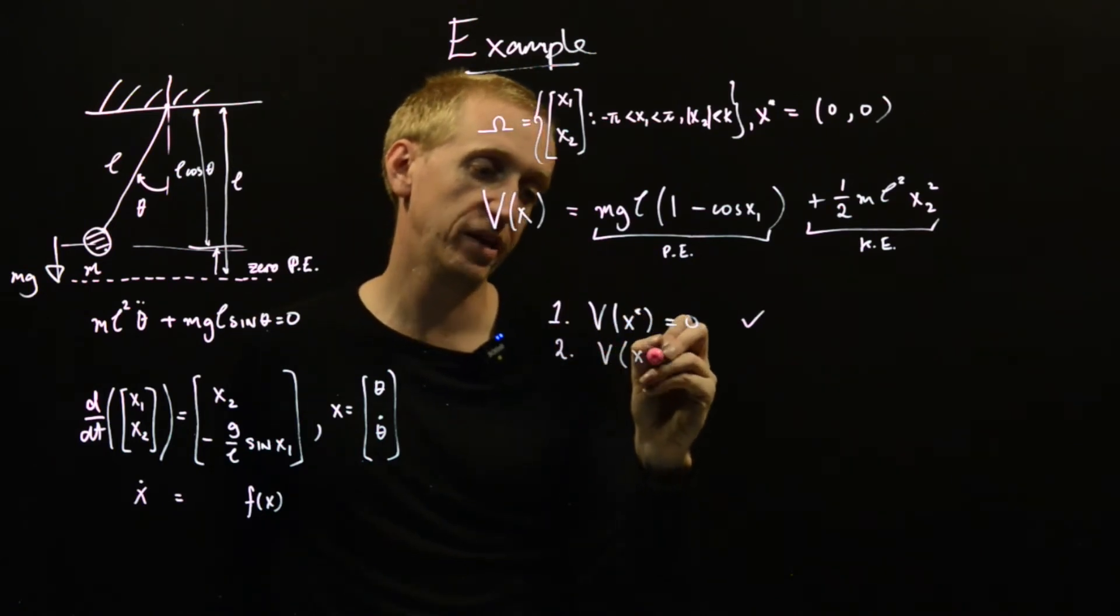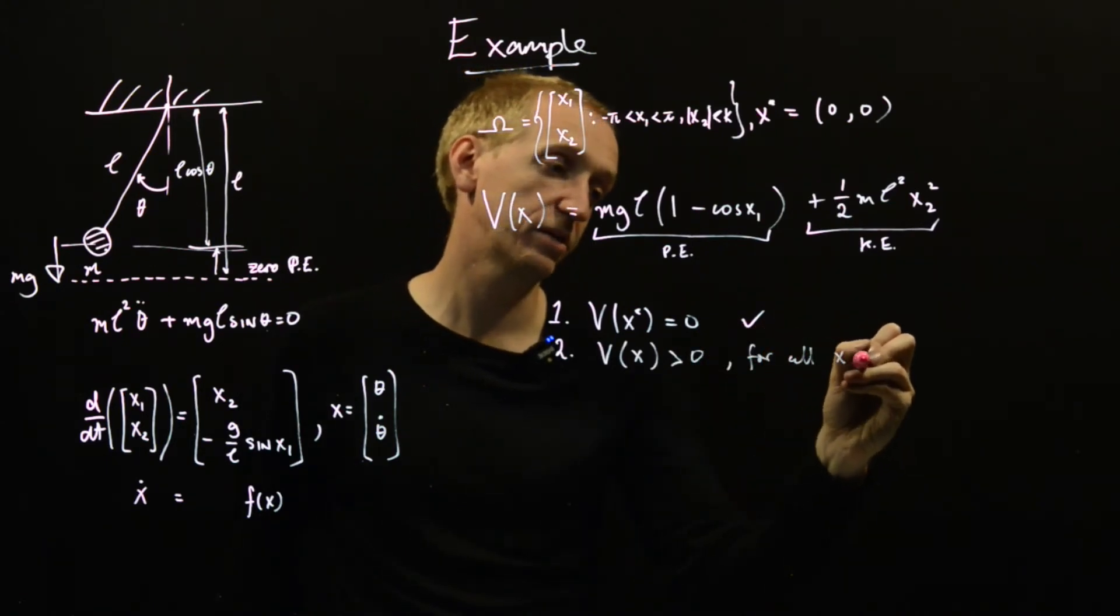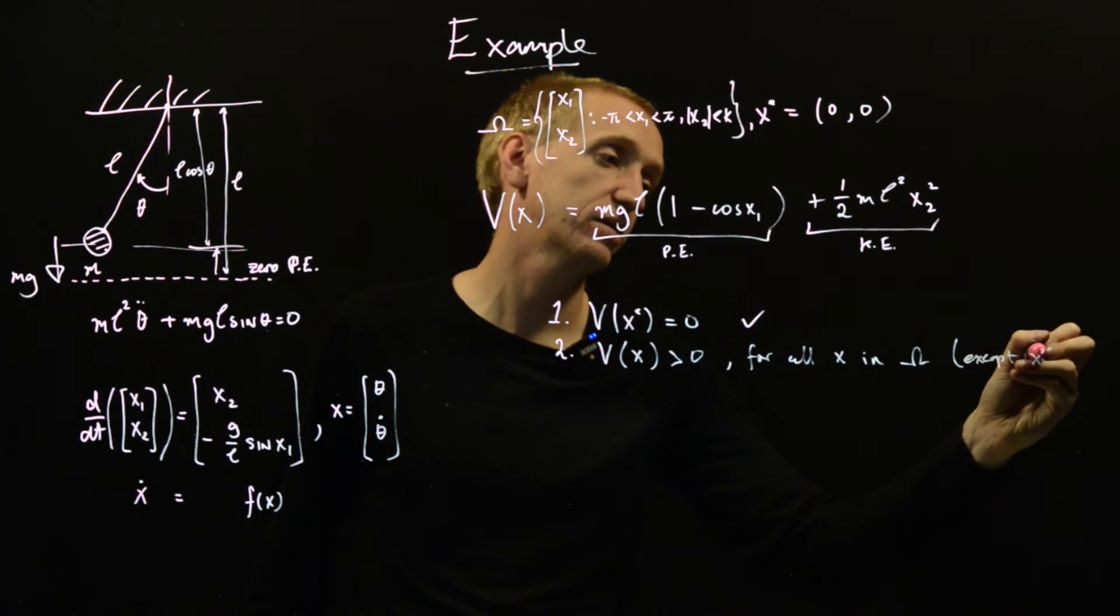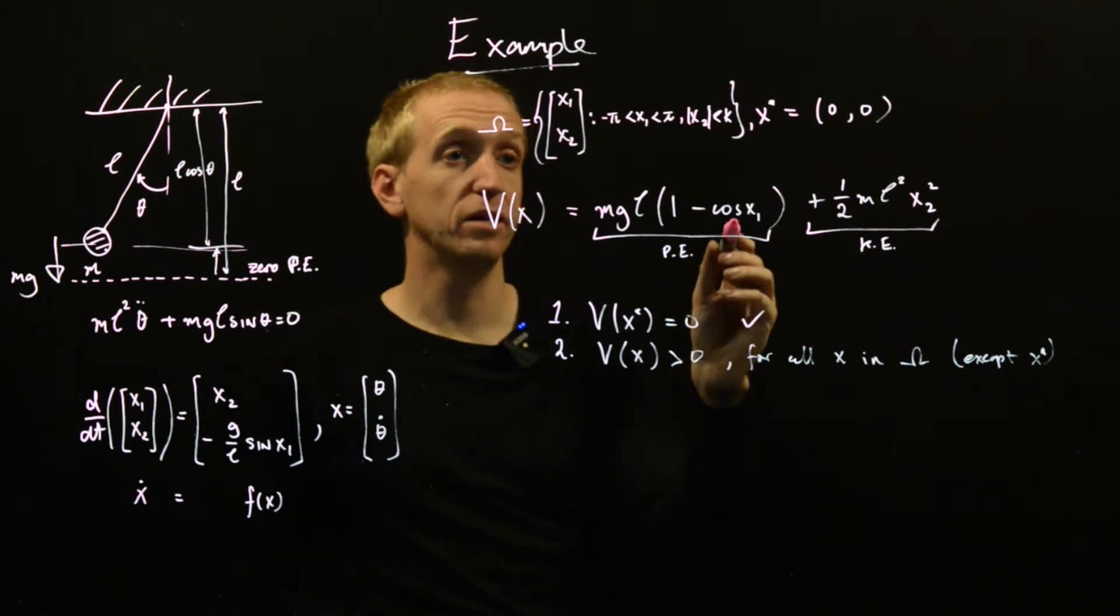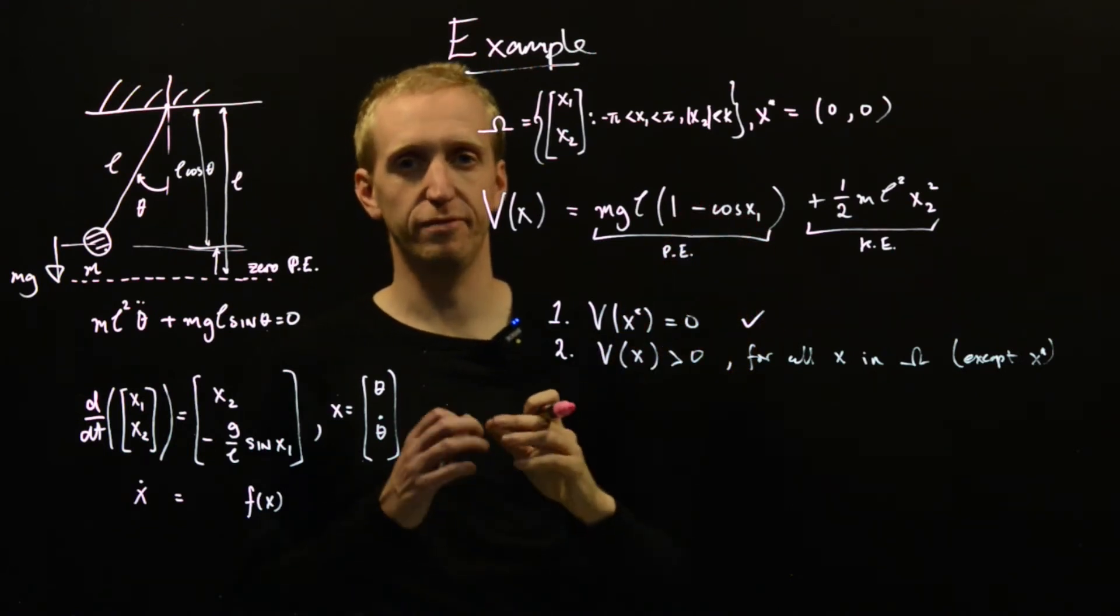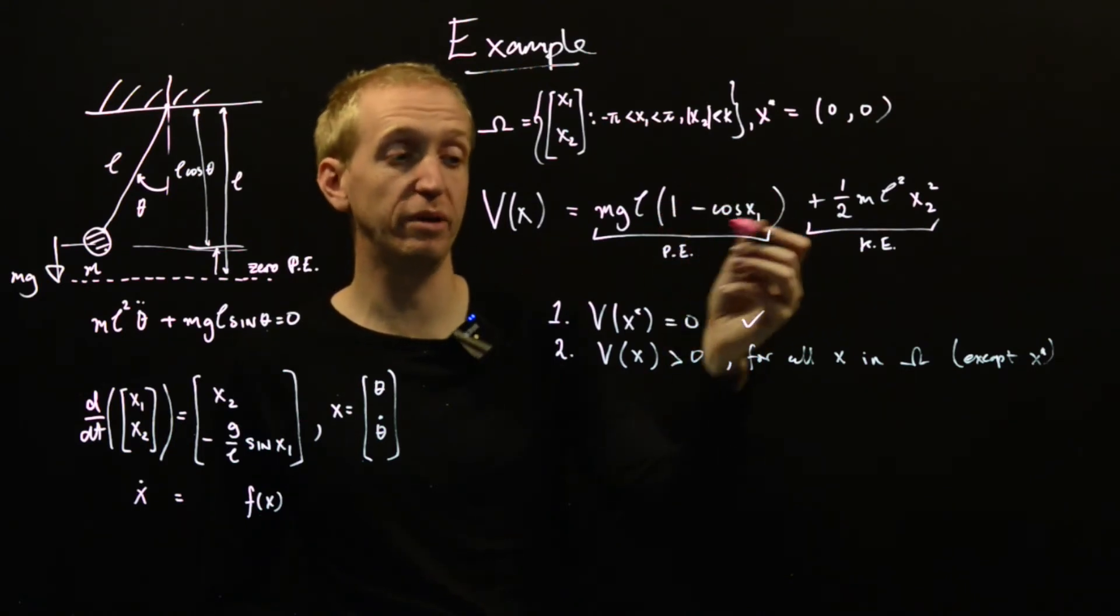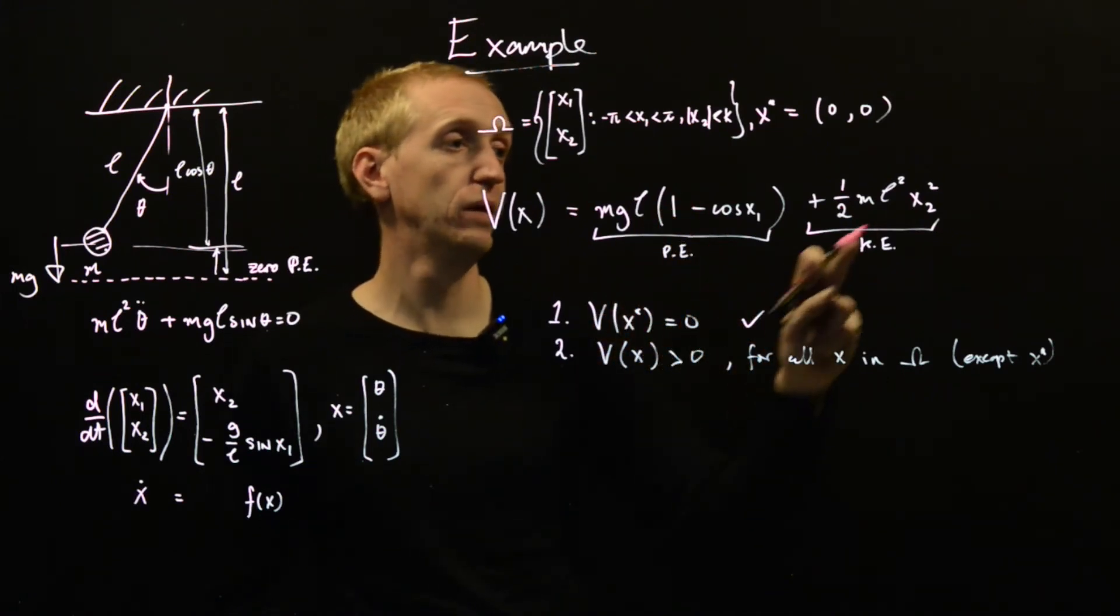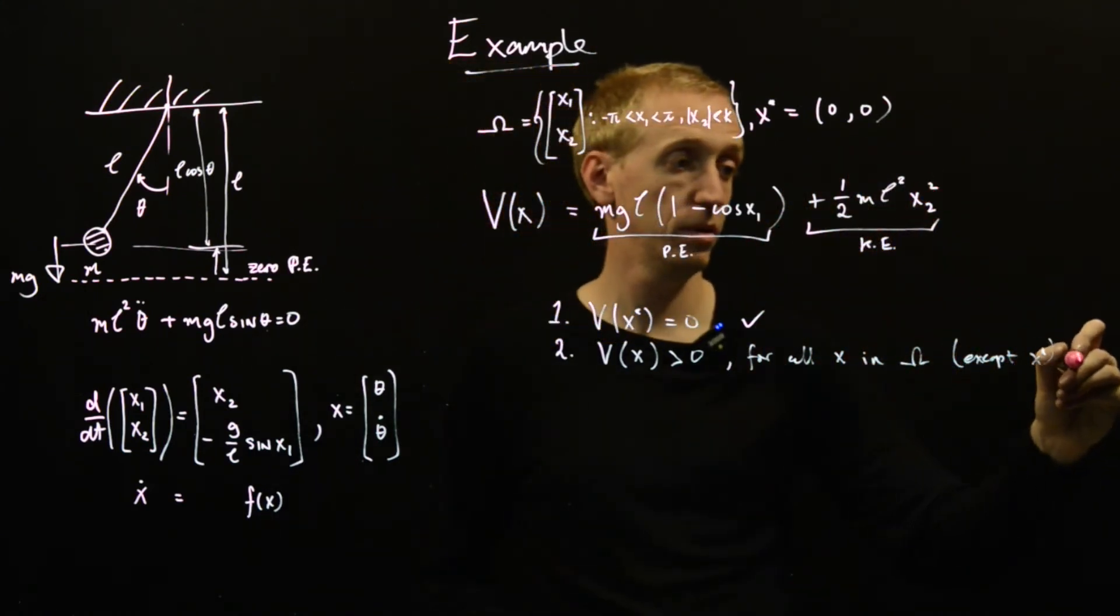We need V of x to be bigger than 0, for all x in omega, except x star. And again, we can just see this directly here. As long as x1 lies in this region here, cos of x1 will always be a little bit less than 1. So this thing can only become 0 at the value that x1 is equal to 0. And similarly, this thing is always positive, except for the value x2 is equal to 0. So check.